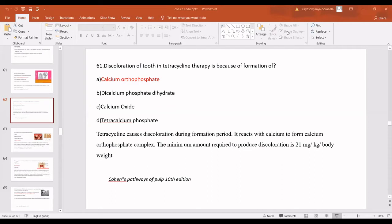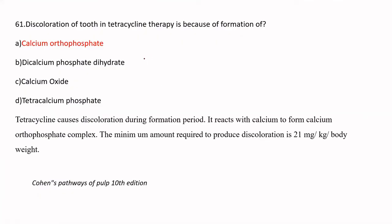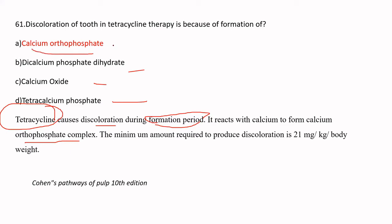The discoloration of the tooth in tetracycline therapy is due to the formation of calcium orthophosphate. Tetracycline causes discoloration during the formation period because the calcium present in the tooth forms a calcium orthophosphate complex when it interacts with tetracyclines. This discoloration occurs when the tetracycline dose is greater than 21 mg per kg body weight.